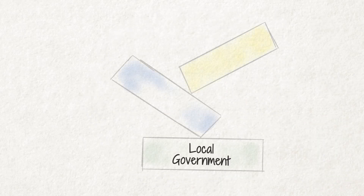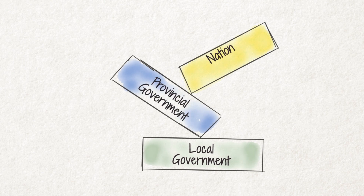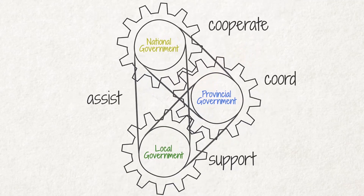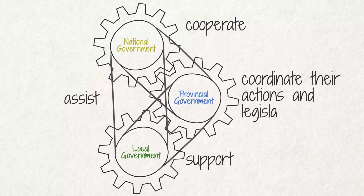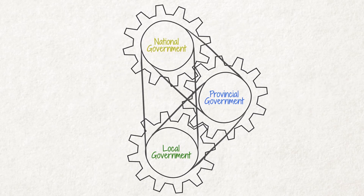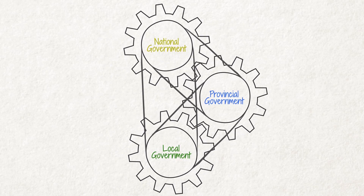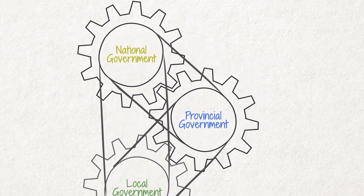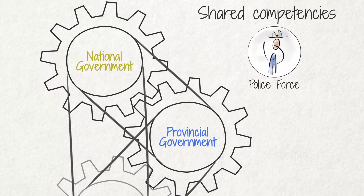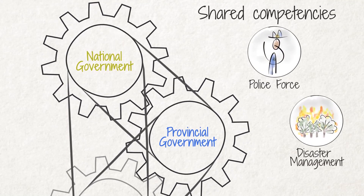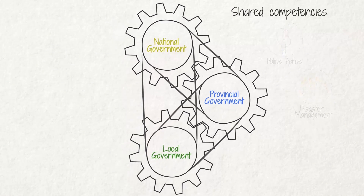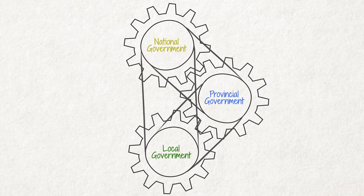Although each sphere of government has its own exclusive competencies, all three spheres must cooperate, assist and support, and coordinate their actions and legislation with one another. For some functional areas they also share competencies and responsibilities. For example, national and provincial government share the responsibility for the police force and disaster management. For other functional areas, all three spheres of government share competencies and responsibilities — for example, housing.